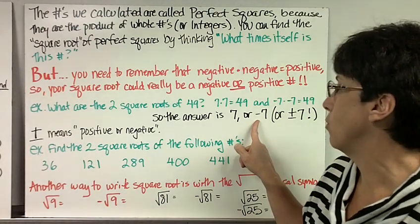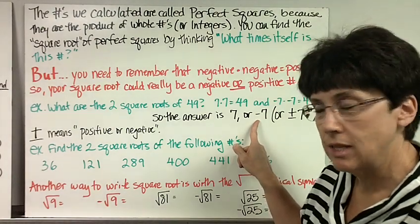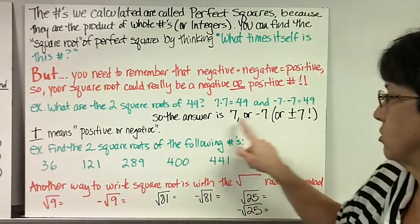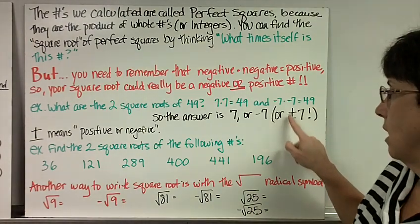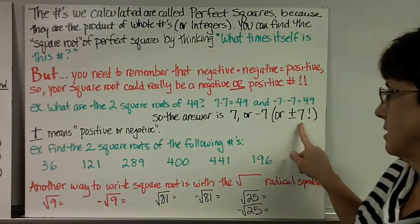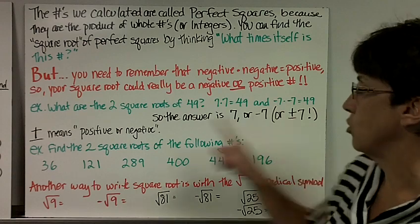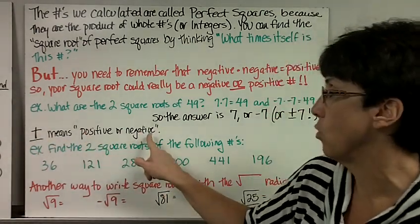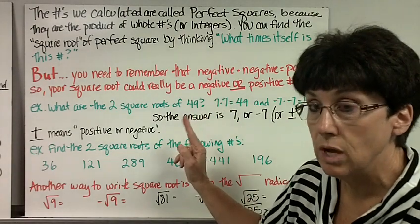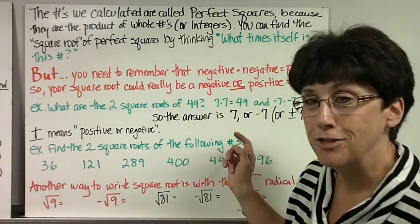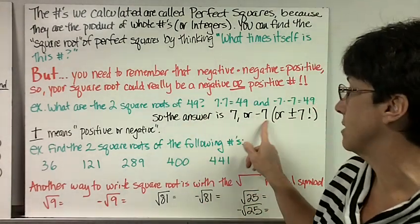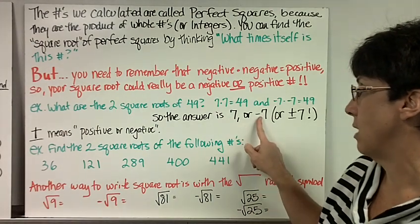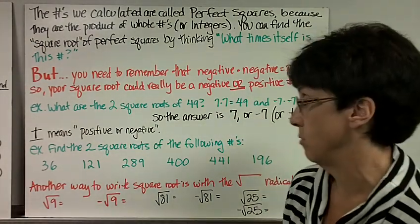But, in math, we've thought of a way to be more efficient so we don't have to write the number twice, the 7's twice. And we say this symbol, plus or minus 7, which means, I'm going to show you over here, this symbol with a plus and a minus underneath means positive or negative. So it means two numbers, but you know how we are so efficient in math we don't want to have to write it twice. We just write the sign, the positive, the negative, and then the number.